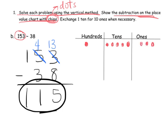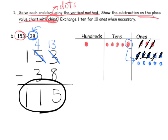There's our 153. Now we're going to subtract 38. The first thing we need to do is take away 8 ones, but we only have 3 ones right now, which means we have to do some unbundling. So I'm going to take one of these tens and cash it in for 10 ones: 1, 2, 3, 4, 5, 6, 7, 8, 9, 10. Now we can take away our 8 ones: 1, 2, 3, 4, 5, 6, 7, 8 — leaving us with 5 ones left over.